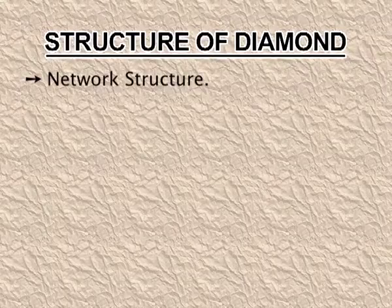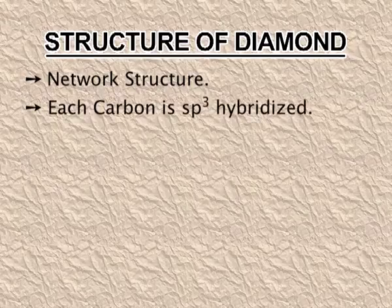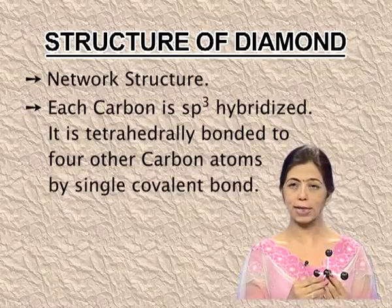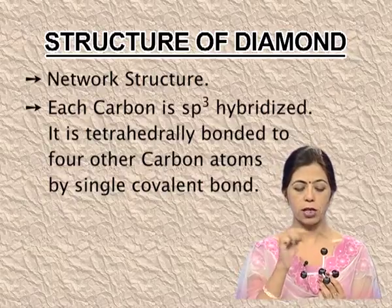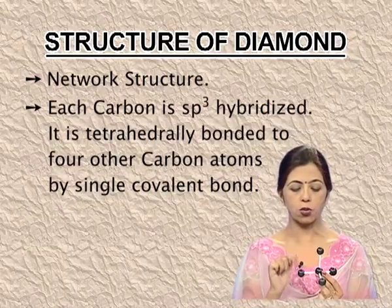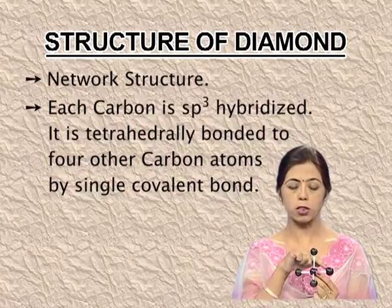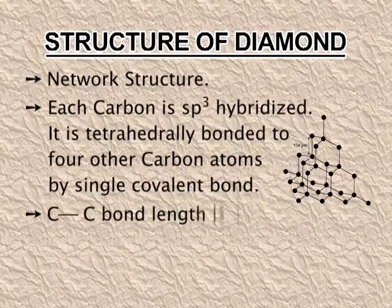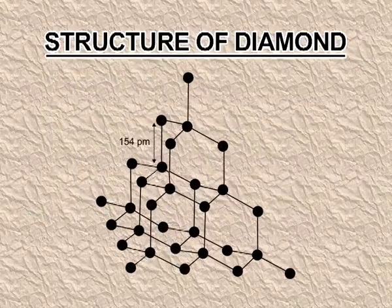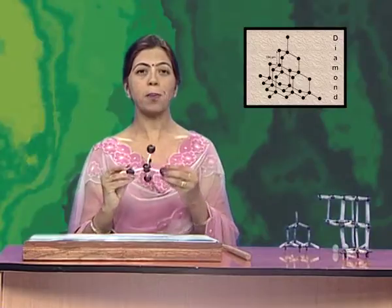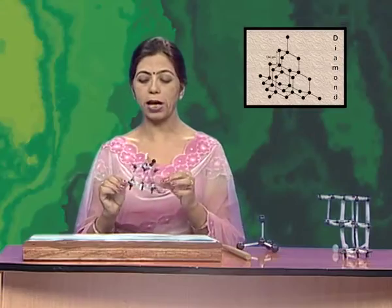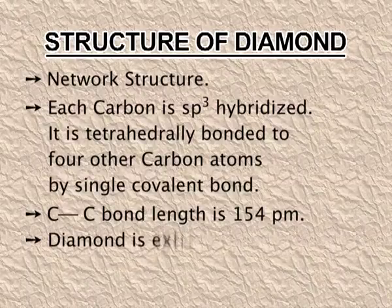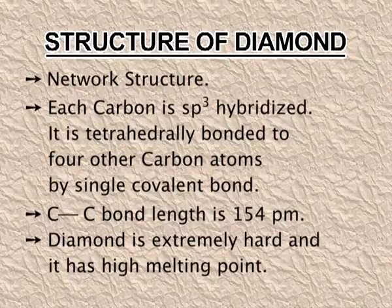Diamond has a network structure. Each carbon in diamond is sp3 hybridized and is tetrahedrally bonded to four other carbons. In the center of the tetrahedron there is a carbon attached to four other carbons via covalent bonds, with the other four carbons at the corners of a regular tetrahedron. The carbon-carbon bond length is 154 picometers, and this unit repeats itself in three-dimensional space, giving a strong network covalent structure.